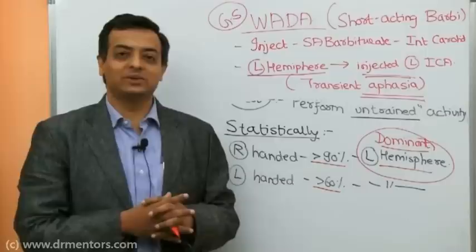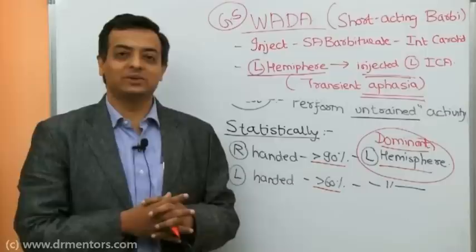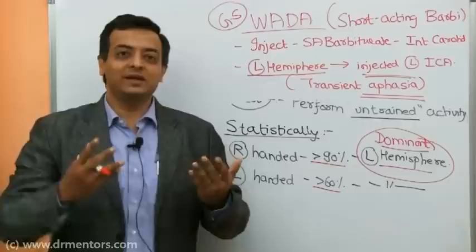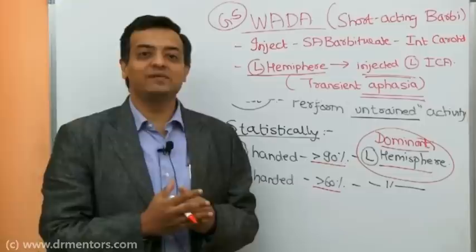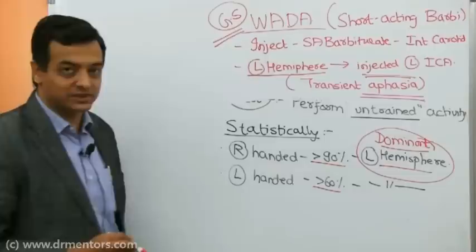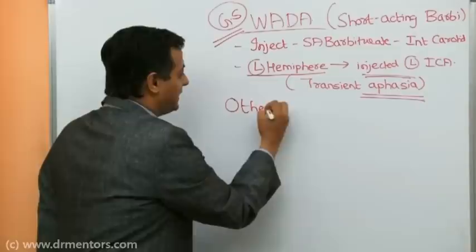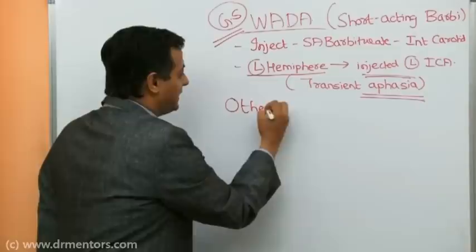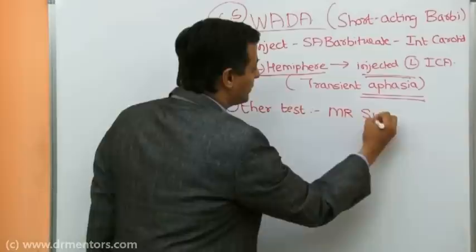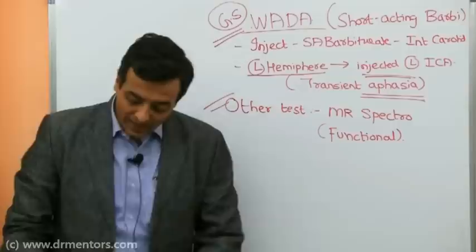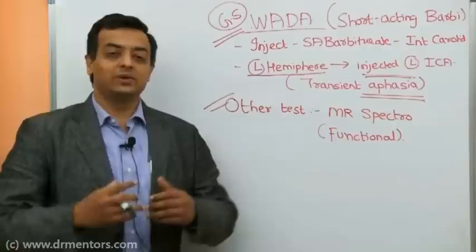As a historical note, this test was actually invented during World War One and was used as a torture technique — prisoners were injected with a short-acting barbiturate into the internal carotid artery and were temporarily unable to speak. Despite the grim origin, the WADA test remains the gold standard today, though functional MRI and MR spectroscopy are also used.